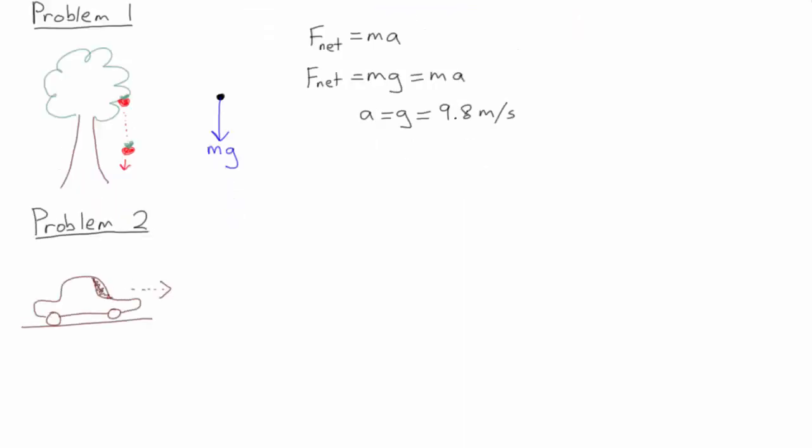For the second problem, we'll analyze a car accelerating from a stop position at a traffic light. Again, the first thing we do is draw a free body diagram. Here we have gravity acting downwards and the normal force acting upwards.